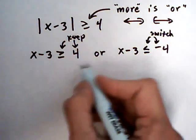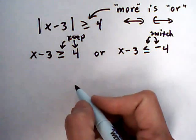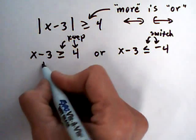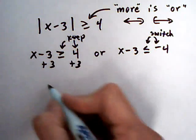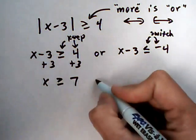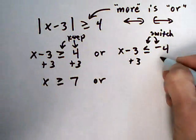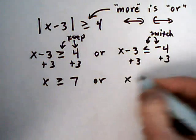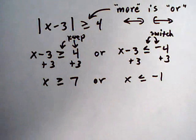So let's go ahead and solve it out. So we solve the two inequalities separately now. We're going to add 3 to both sides. x is greater than or equal to 7. Or, on the other one, add 3 to both sides. x is less than or equal to minus 1.